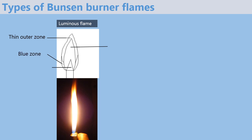Next we have the blue zone, which is right at the bottom of the flame. Here there is a plenty of supply of air from the bottom that comes in currents, and therefore there is almost complete combustion at the blue zone.